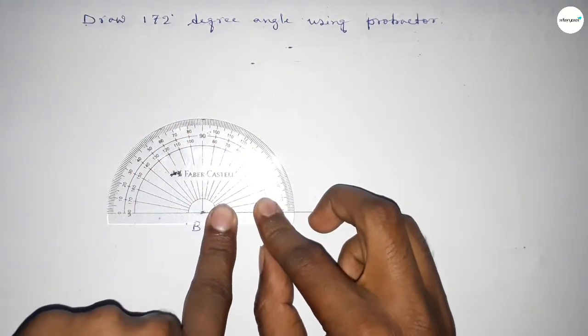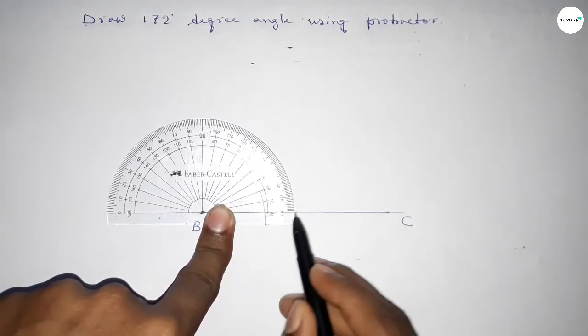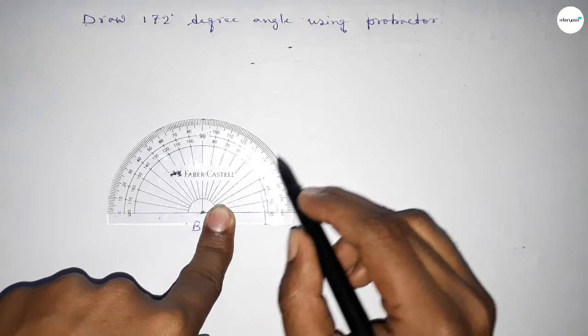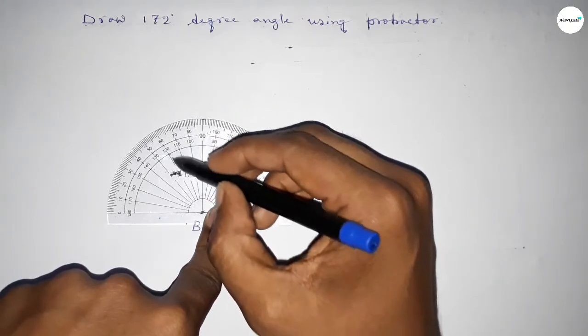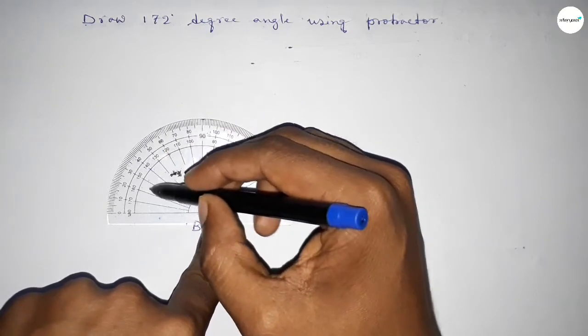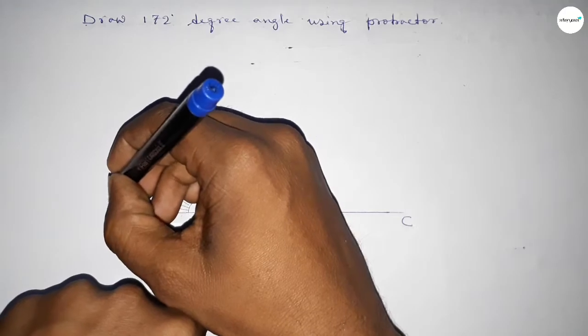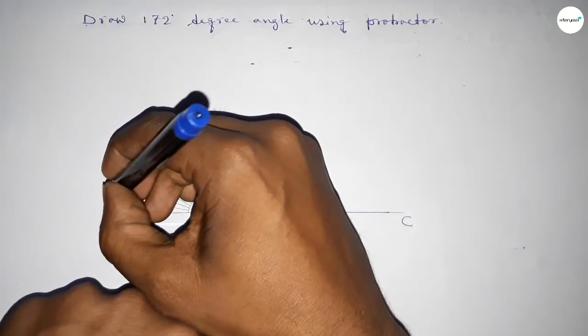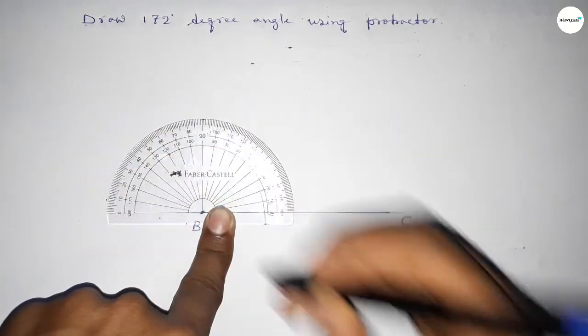Then counting the angles. So this is starting 0, 10, 20, 30, 40, 50, 60, 70, 80, 90, 100, 110, 120, 130, 140, 150, 160, 170. This is 171, 172. So this is 172 degrees.